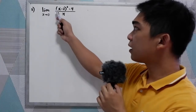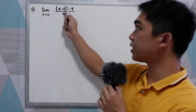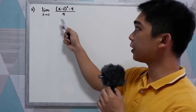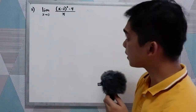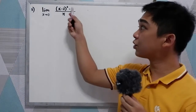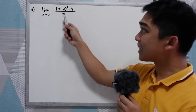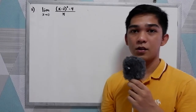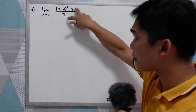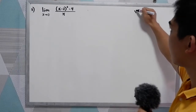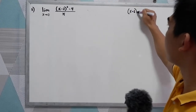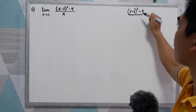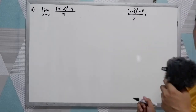Now let's have our second example: the limit of the quantity (x minus 2) squared minus 4, all over x, as x approaches 0. So in evaluating, our first step is to check if our function is in simplest form. Let us first simplify our function.